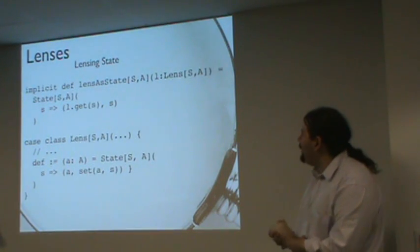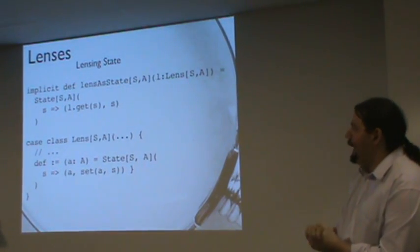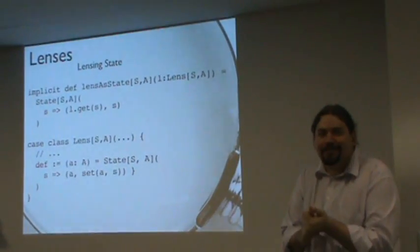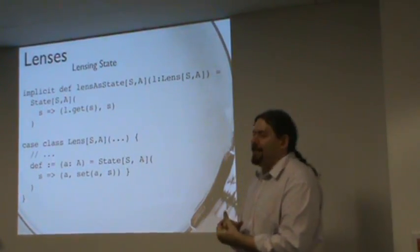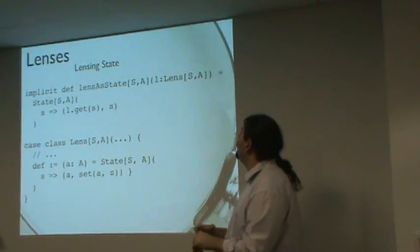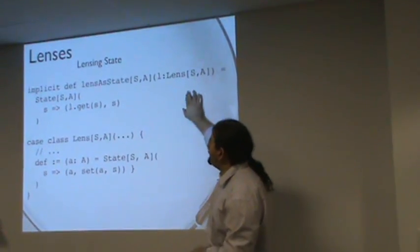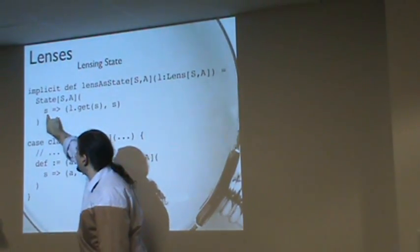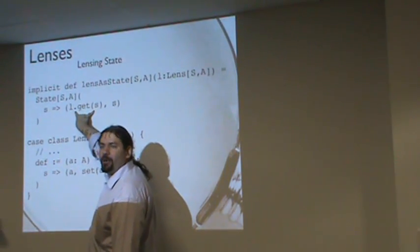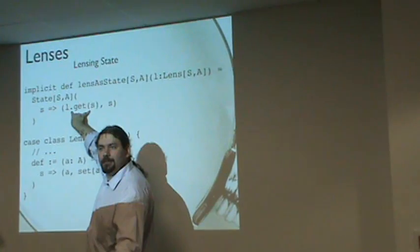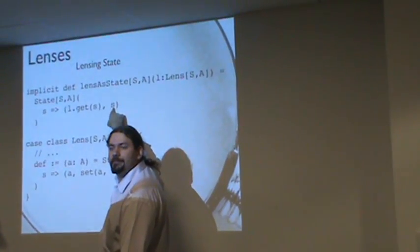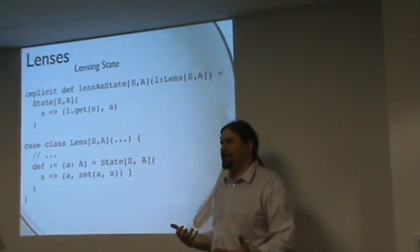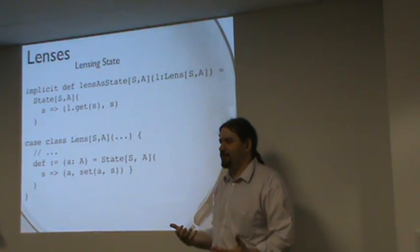But we could define an implicit conversion from a lens to a state action. We could take a lens and use it as an action that knows how to get some portion of our state out. Here I've got a lens that goes from an S to an A. I can use that as a state action from S to A. It's going to take my state and use my lens to read out the portion that I care about and return that as my result. It's going to leave the state untouched. That one implicit conversion now lets me use lenses like variables inside of state monad computations.